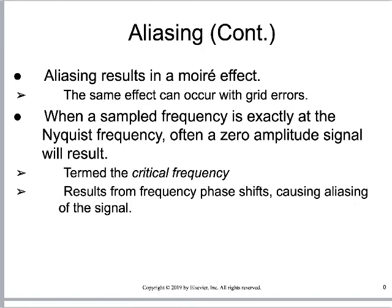Grids can contribute to a moray effect even if you're using the grid correctly. The grid throws in an interference pattern — whether stationary or oscillating — as an additional signal that the computer sees. This is one of the reasons why we need to move away from grids the deeper we go into digital imaging. People moved from 8:1 grids to 5:1 grids for portable work about 5 to 10 years ago because they recognized this error. Sometimes we call this a critical frequency, and if sampling occurs at exactly the same rate it can also cause aliasing.